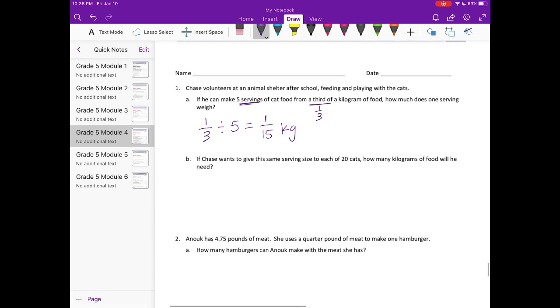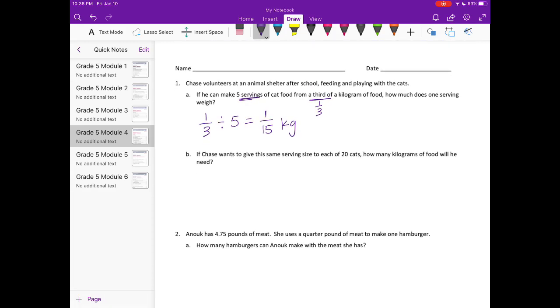Part b: If Chase wants to give the same serving size to each of 20 cats, how many kilograms of food will he need? One fifteenth of a kilogram for 20 cats, so times 20. That would be equal to one times 20 over 15, or 20 fifteenths. If we make that a mixed number, we have one and five fifteenths, or one and one third kilograms to feed all those cats.